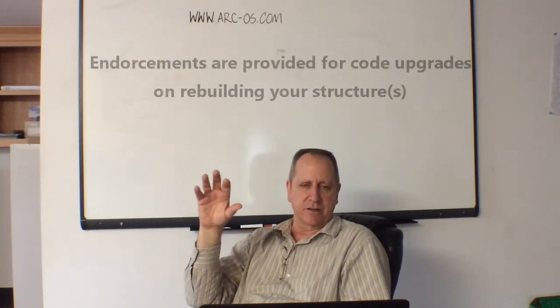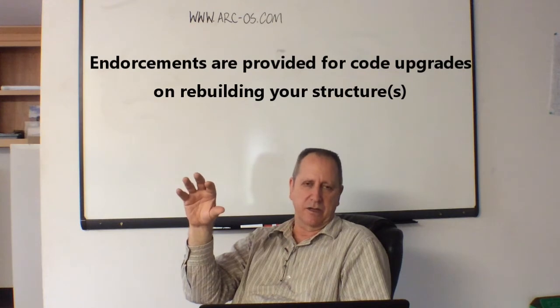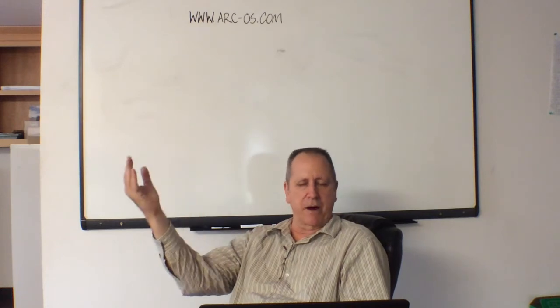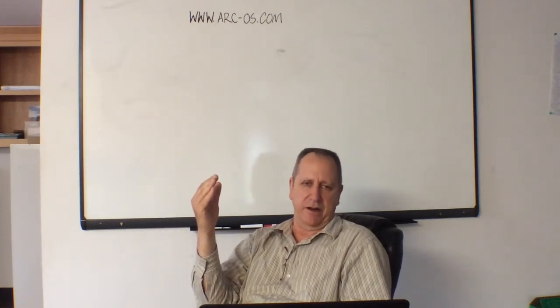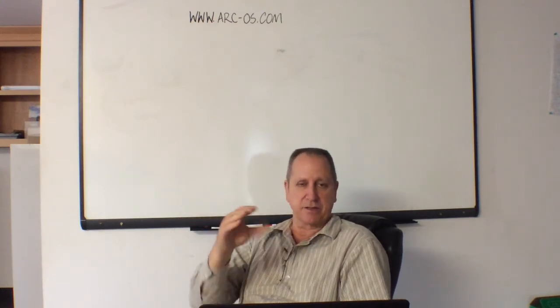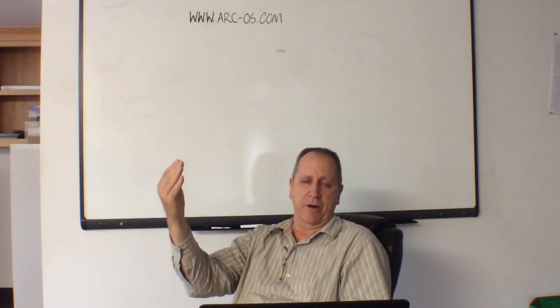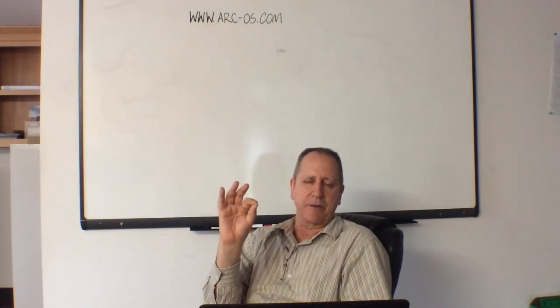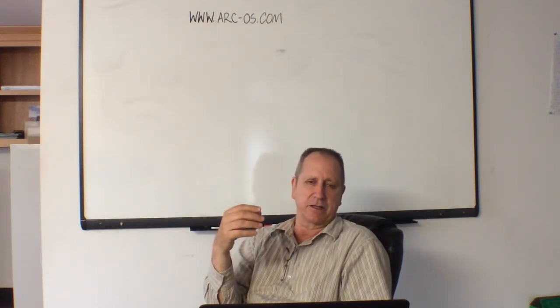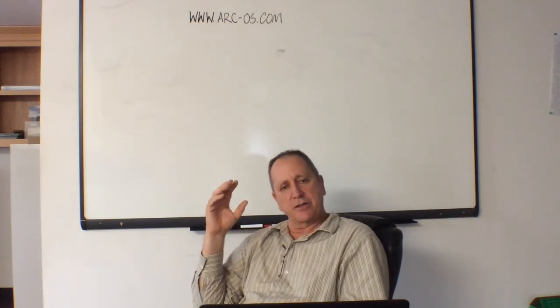Inside the policy there are also endorsements. For instance, there's usually an endorsement for building codes. If your house didn't have a foundation, the building department won't let you rebuild without one — that's what we call a code upgrade. There's usually a policy provision that pays additional money on top of the Coverage A limit for code upgrades, sometimes called a building endorsement. This covers what the county or city is going to require.